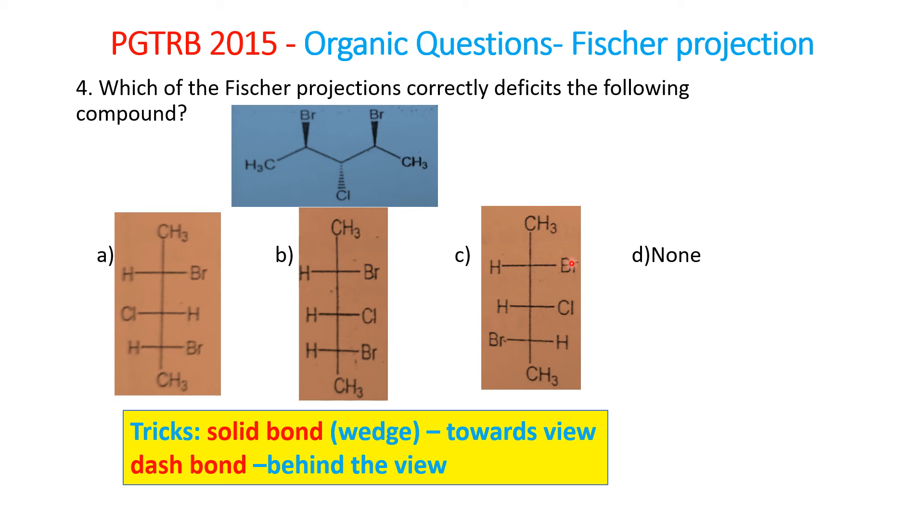In option C, bromine and chlorine are on the same plane, and one bromine is away from the plane. This is also not correct. Two bromines should be in the same plane and one should be away from the view. Therefore, answer A is correct.